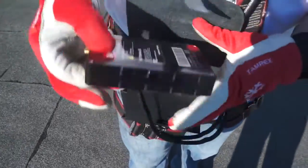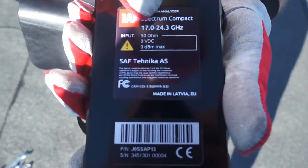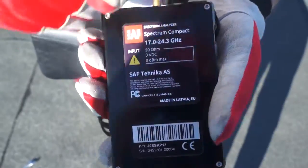Inside of this leather pouch is the Spectrum Compact unit itself. This model operates between 17 gigahertz and 24.3 gigahertz.